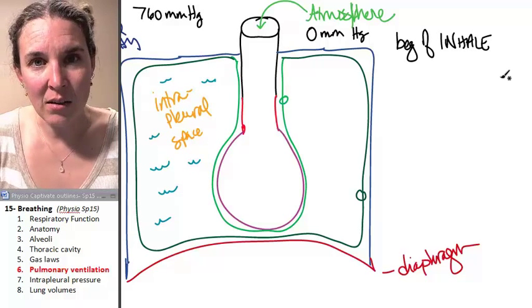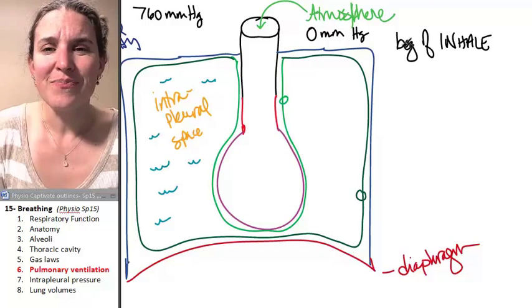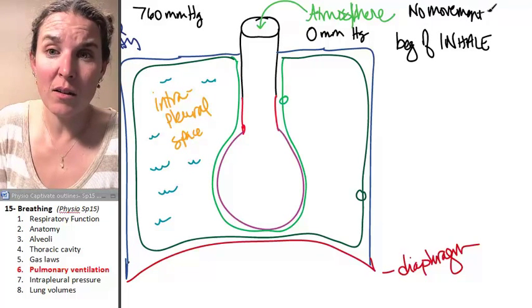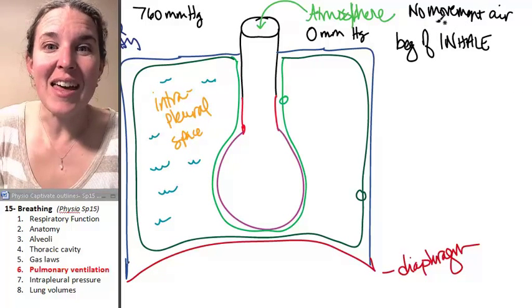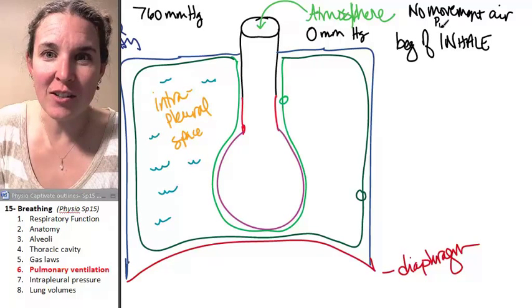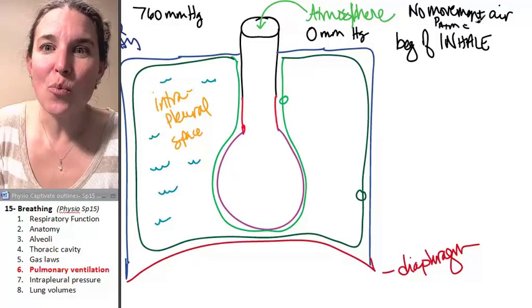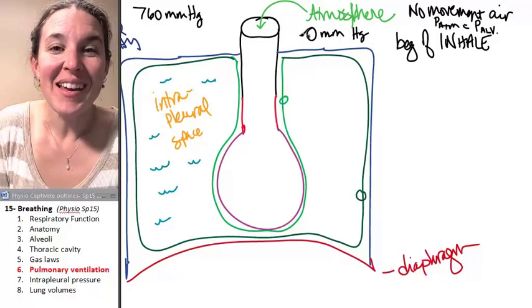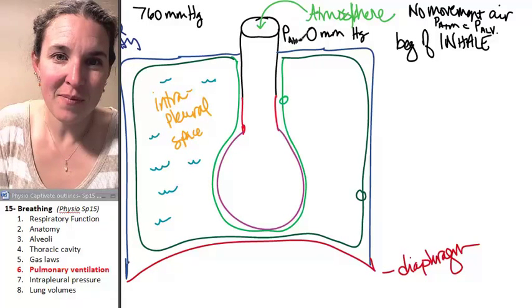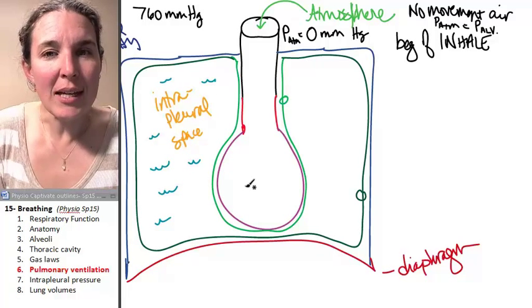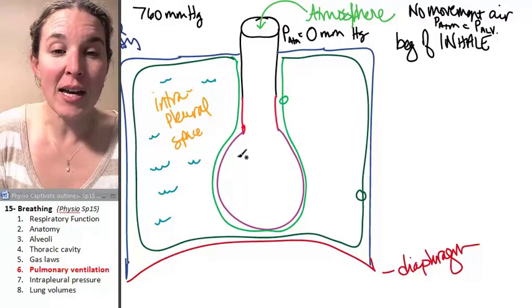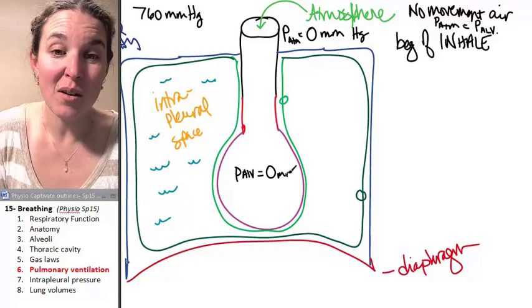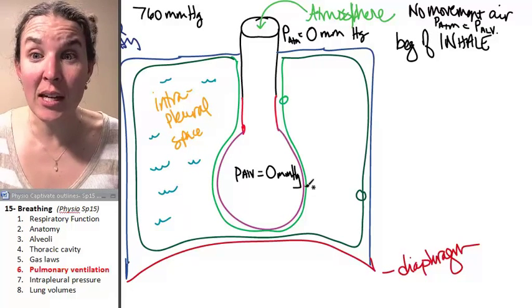At the beginning of an inhale, we don't have any movement. Right before the beginning of an inhale, let's say there's no movement of air. And if this is true, then pressure outside atmospheric pressure has to equal pressure in your alveoli. We're just calling it zero, which means before a breath happens, we have to have pressure of the alveoli equal to zero. That's the only way we can have no movement.